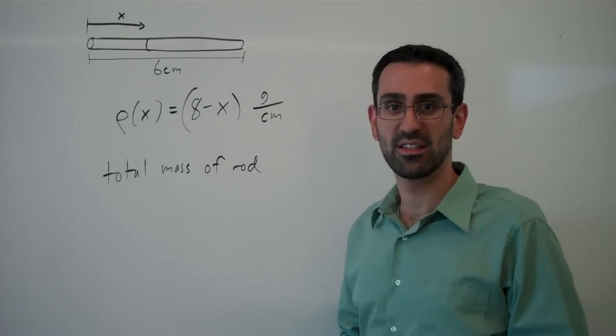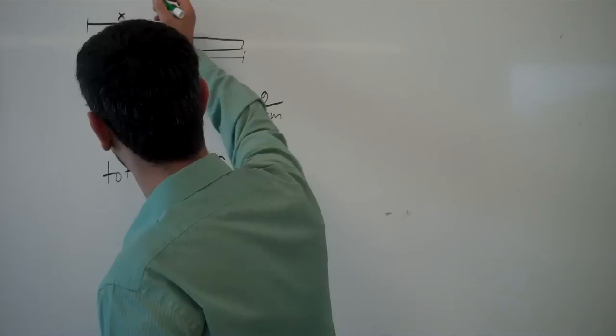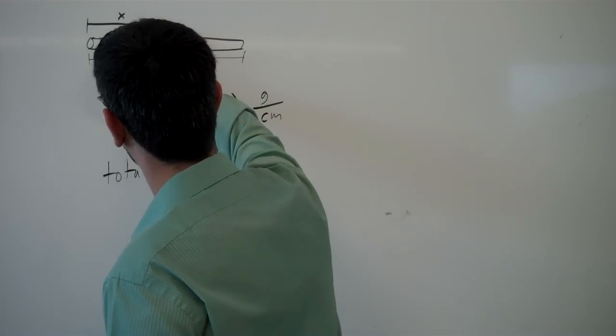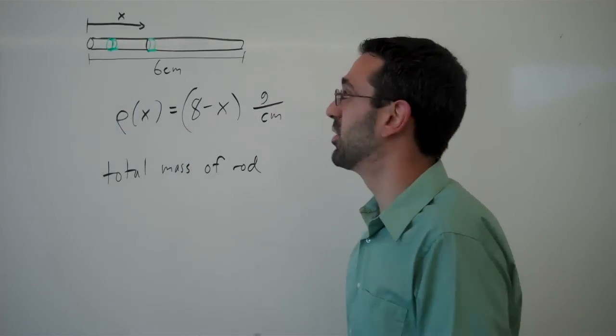On each bit, the density will essentially be constant. So we're going to chop this rod up into a bunch of tiny little pieces of rod.